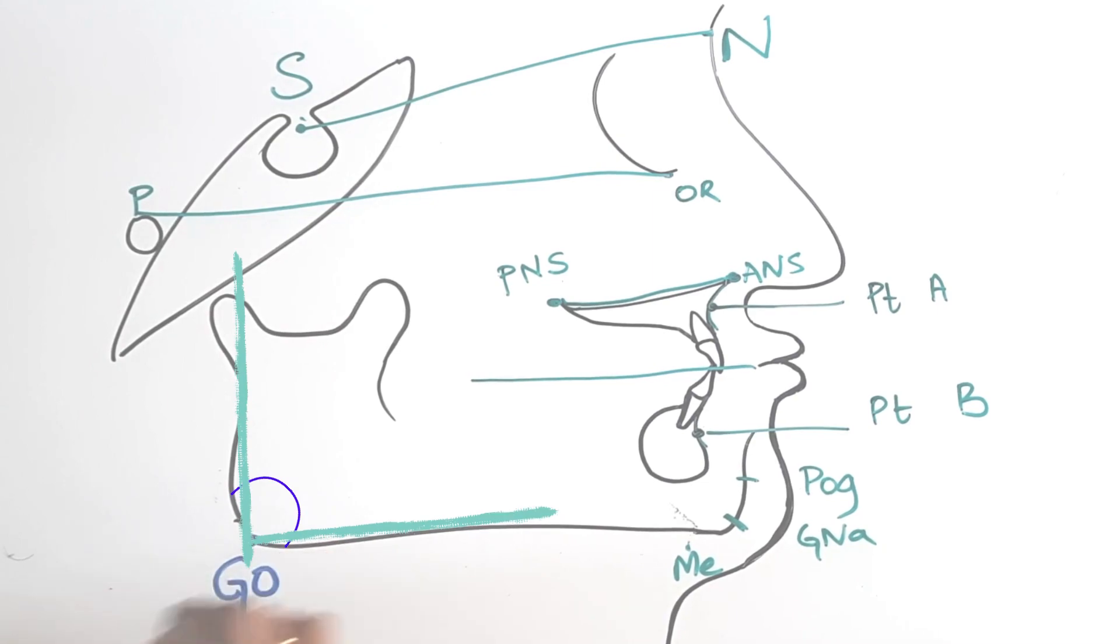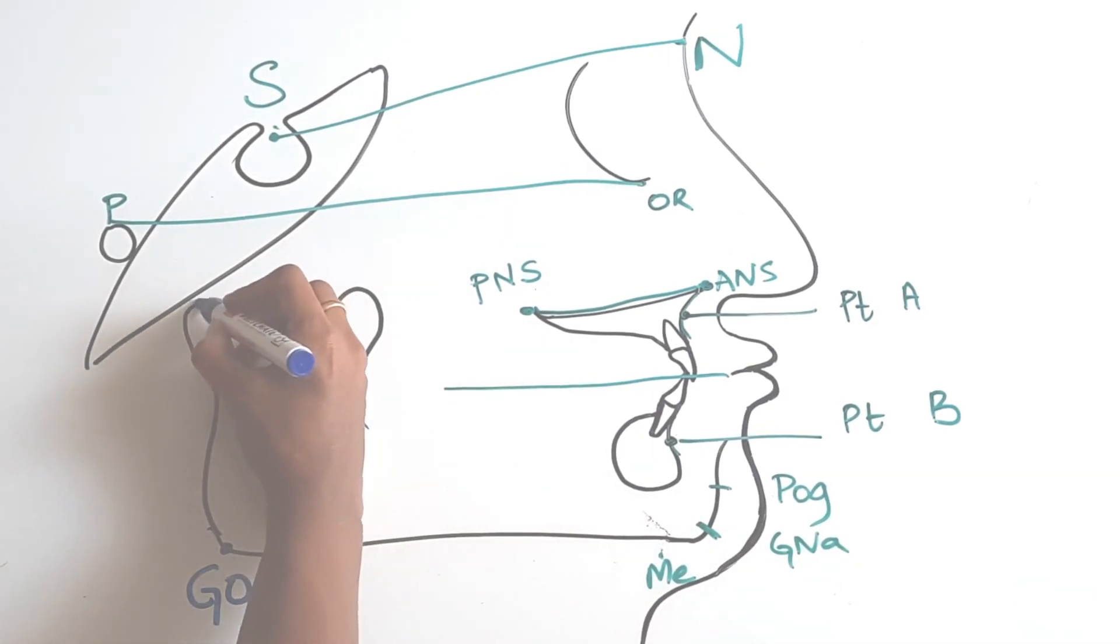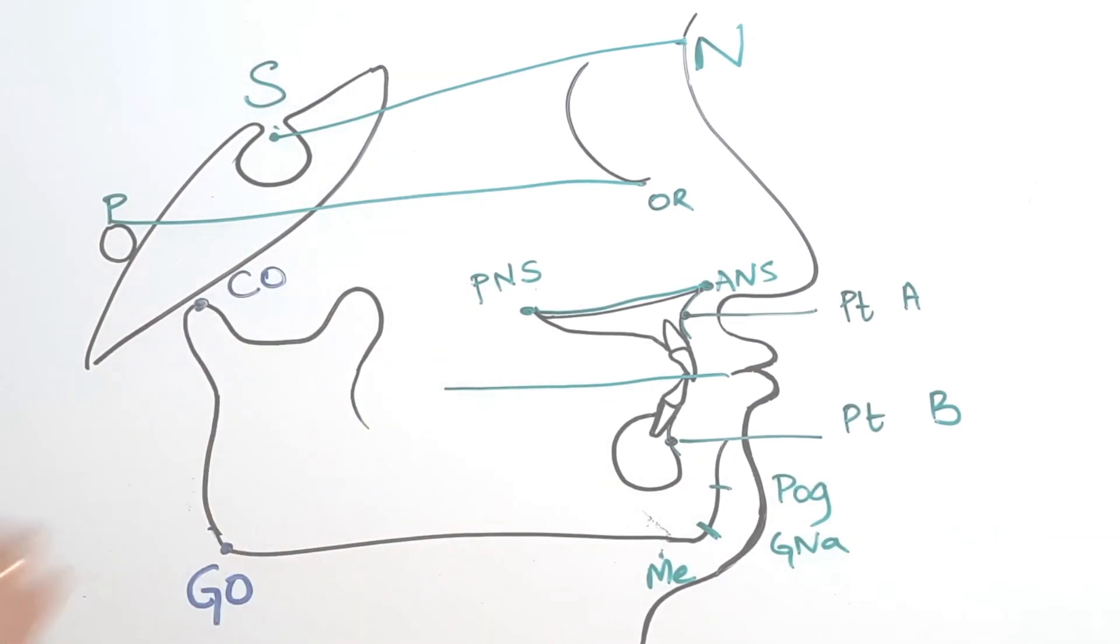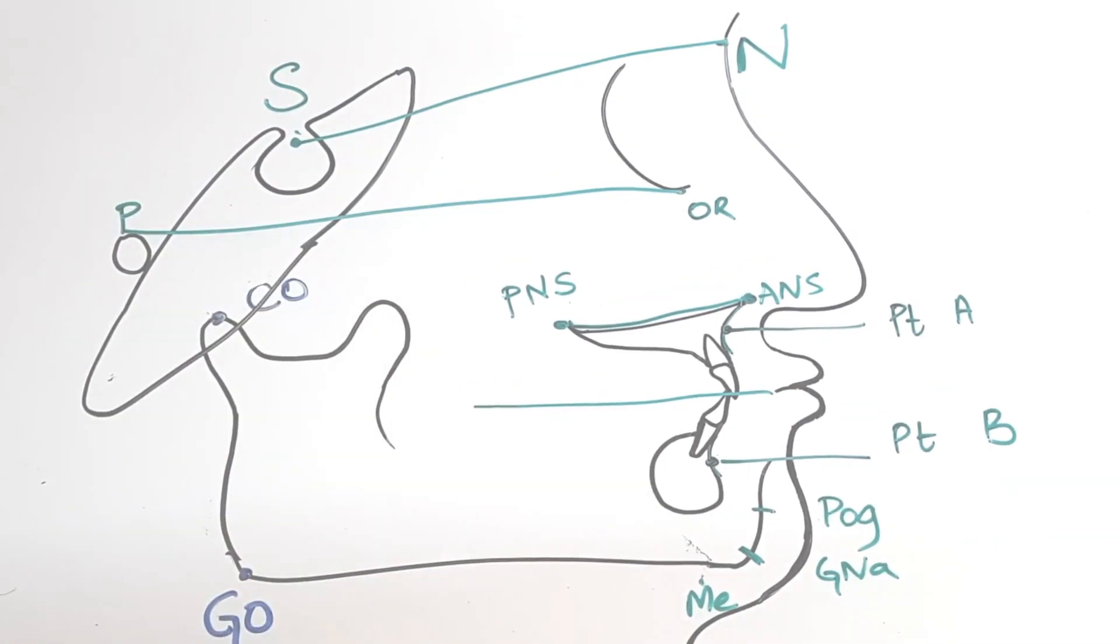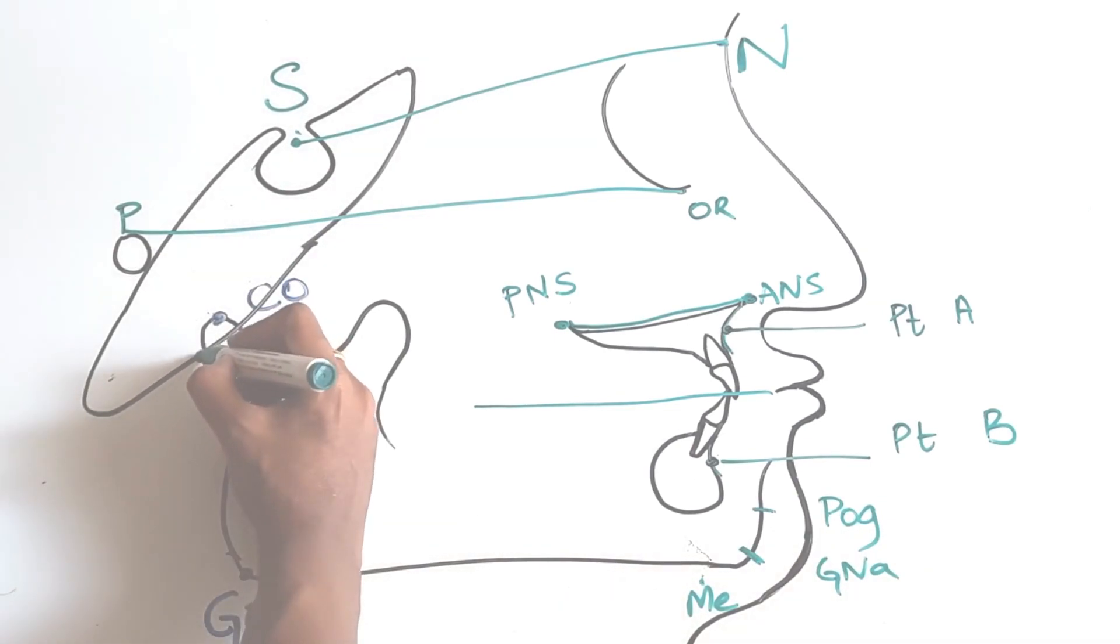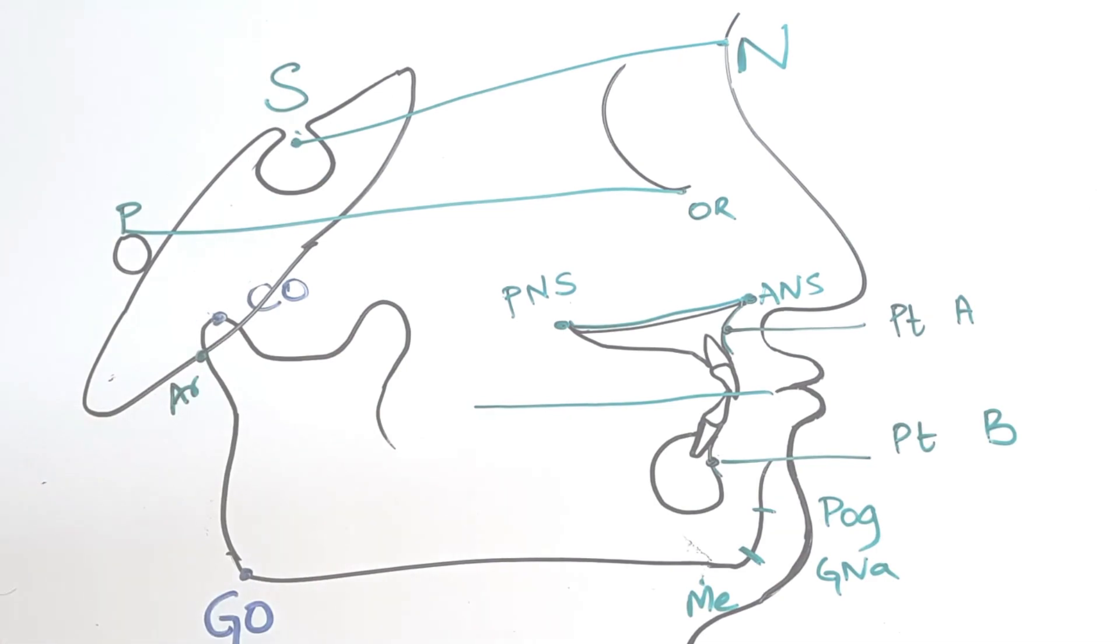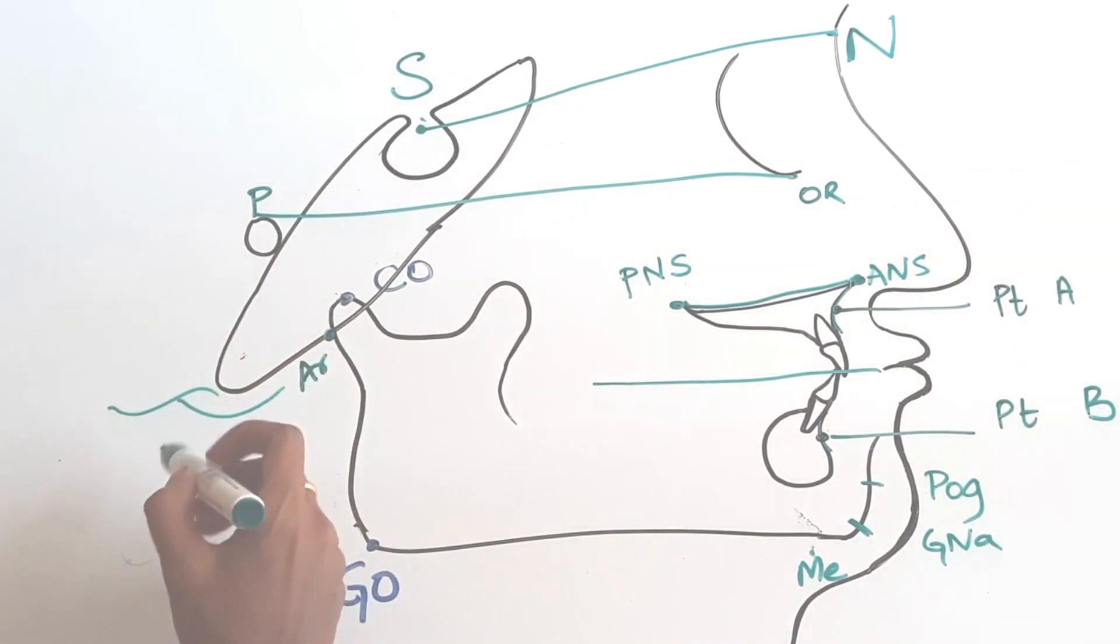Gonion is the point at the angle of mandible and CO is the superior point on the condyle. CO stands for condyle. Articular is the intersection of the inferior surface of the cranial base and the posterior border of the ascending rami of the mandible, AR.